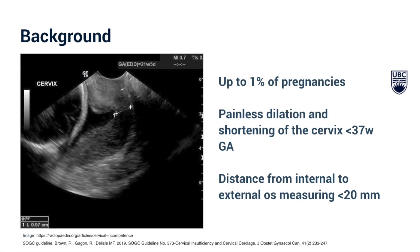Cervical insufficiency is estimated to affect nearly 1% of all pregnancies and can lead to preterm birth, premature rupture of membranes, and ultimately pregnancy loss and neonatal death. Cervical insufficiency is defined as painless dilatation and shortening of the cervix before term and without labor. This is commonly identified in pregnancy as a short cervix less than 20 millimeters.